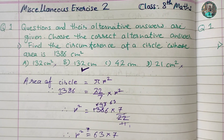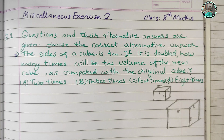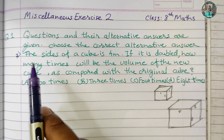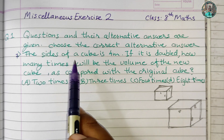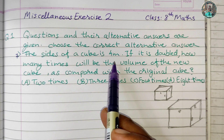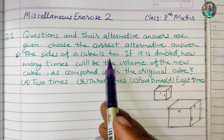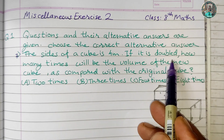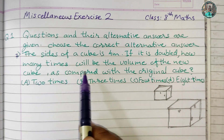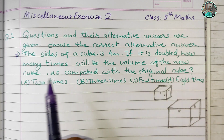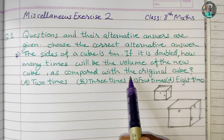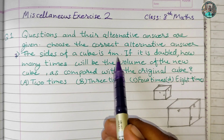Next question — question 1b. The side of a cube is 4 meters. If it is doubled, how many times will the volume of the new cube be as compared with the original cube?